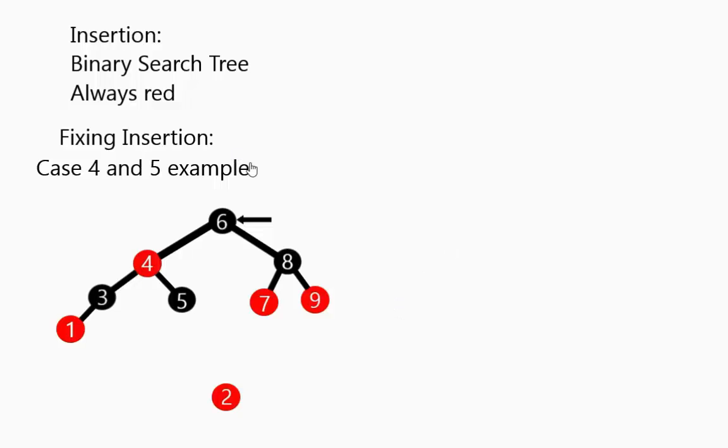Here is an example. When we look at case 4 and 5, if we add the 2, we go down the left, go down the left, go down the left, and then add it to the right because it is larger than the 1.